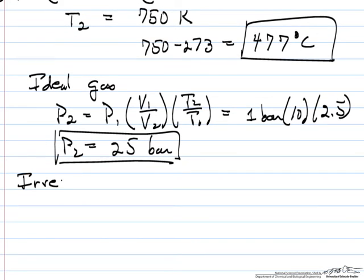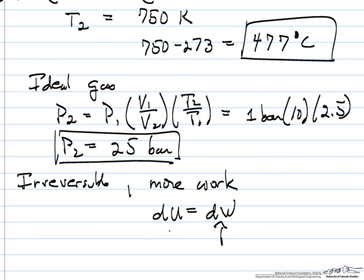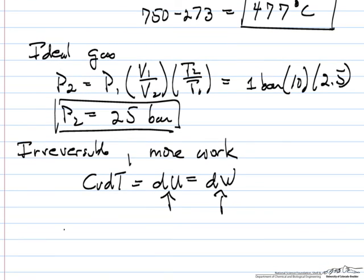Of course, we know it's irreversible, which means it's going to take more work to get to the same volume, and since dU equals dW, this goes up, this goes up. And since dU is Cv dT, that means the temperature is higher. So when it's irreversible, temperature is going to be higher than 477 degrees centigrade, which means if we look here, the pressure then must be higher than 25 bar.